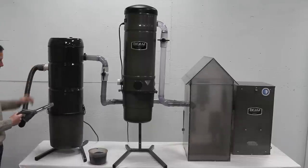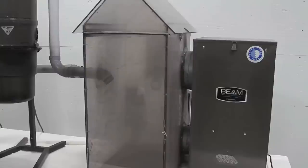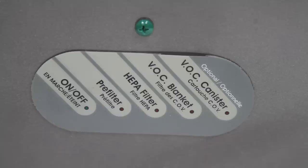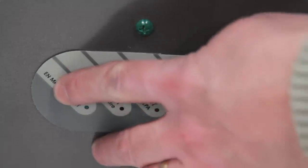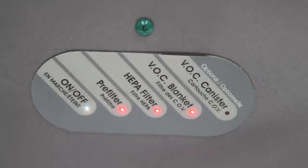A built-in BEAM HEPA air filtration system eliminates 99.97% of dust and allergens in the air. It has three levels of filtration that can trap even the smallest particles, like smoke or airborne viruses.